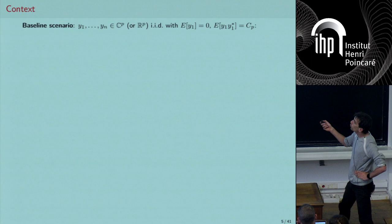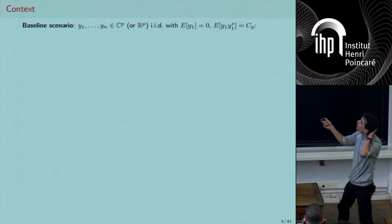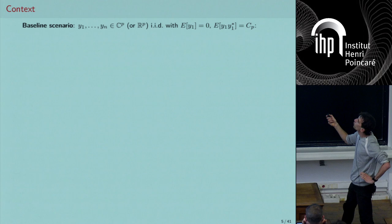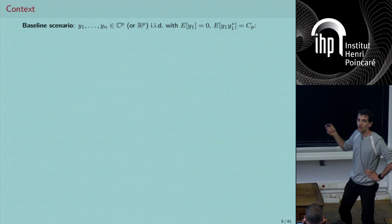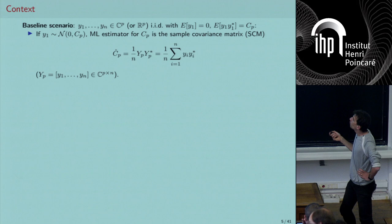Say you have observations y1 through yn that live in R^p, and for simplicity they are Gaussian i.i.d. with zero mean and covariance C. Your objective is to estimate the covariance matrix C. Then obviously you compute the sample covariance matrix Ĉ_p, which is the sum of those outer products — equivalently a Gram matrix.